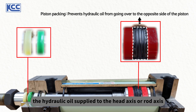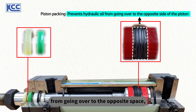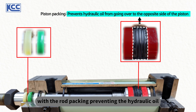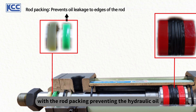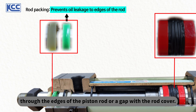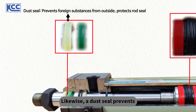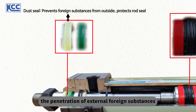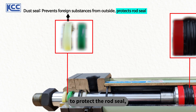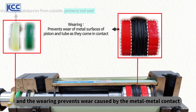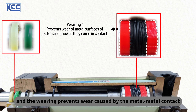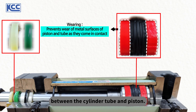Packing parts serve to seal the cylinder so that hydraulic oil does not leak. The piston packing prevents the hydraulic oil supply to the head side or rod side from going over to the opposite space, with the rod packing preventing the hydraulic oil supplied to the rod side from leaking outside through the edges of the piston rod or a gap with the rod cover. A dust seal prevents the penetration of external foreign substances to protect the rod seal, and the wearing prevents wear caused by metal-to-metal contact between the cylinder tube and piston.